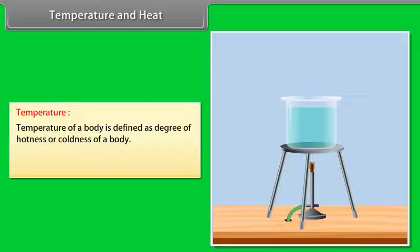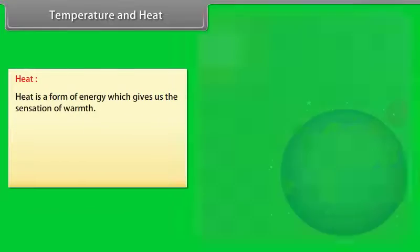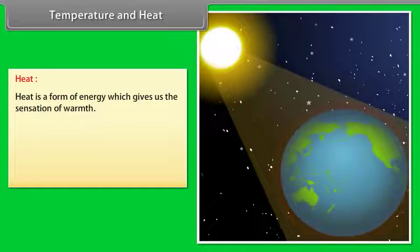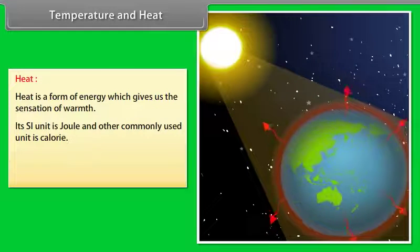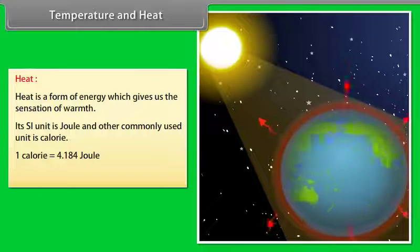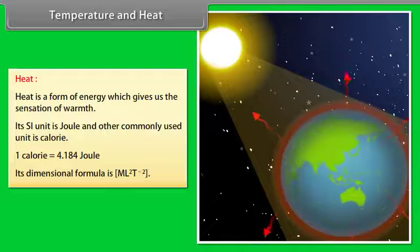Temperature and heat: Temperature of a body is defined as the degree of hotness or coldness of a body. Its SI unit is Kelvin, and degree Celsius is a commonly used unit. Heat is a form of energy which gives us the sensation of warmth. Its SI unit is Joule; another commonly used unit is calorie. One calorie is equal to 4.184 Joule. Its dimensional formula is ML²T⁻².